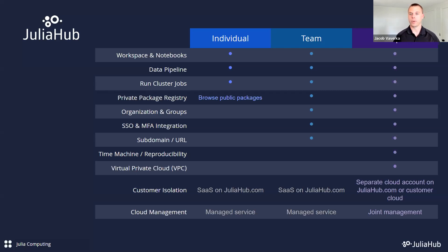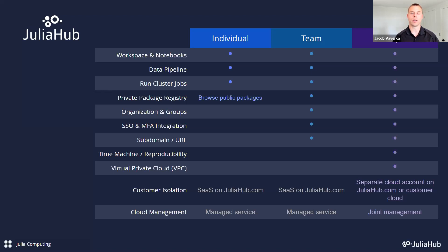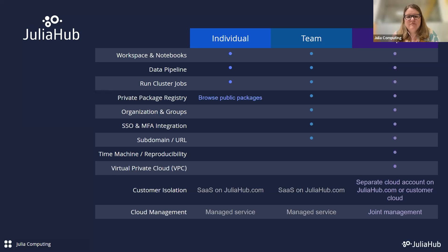There are three tiers of Julia Hub: individual, team, and enterprise. What we're covering today is common to all three. We have workspaces and Pluto notebooks, a data pipeline with facilities for working with data sets and sharing across team members, batch jobs where you can set up a cluster and submit a job, and private package registries for sharing code that doesn't belong in the general open source registry — especially useful for team and enterprise tiers.